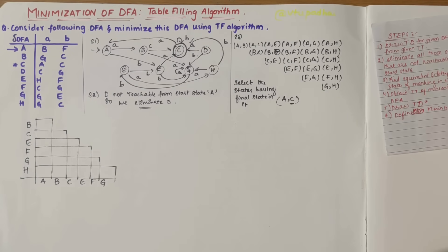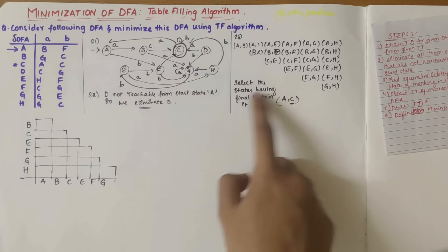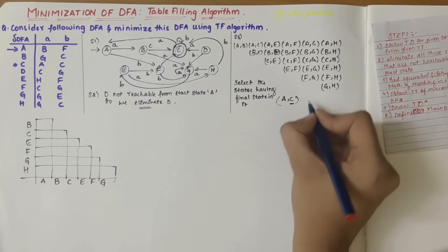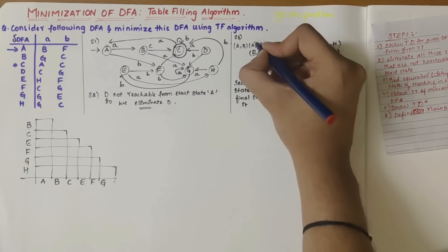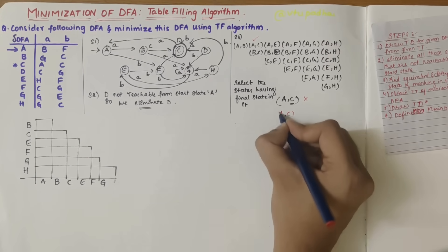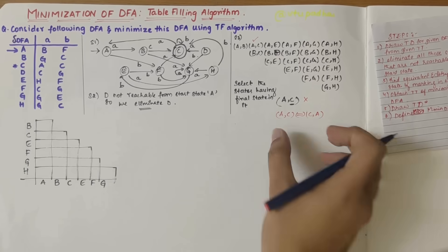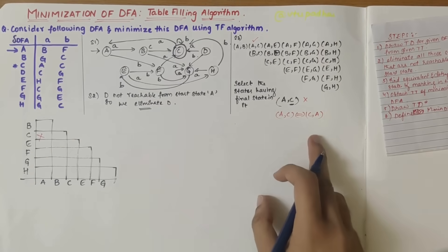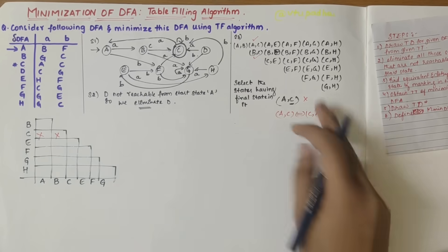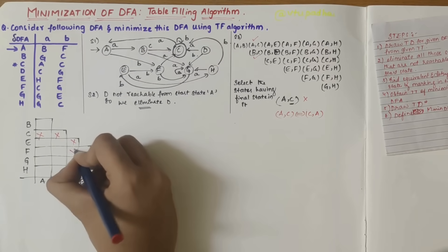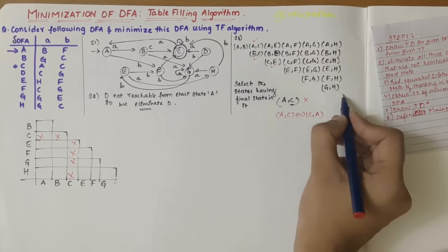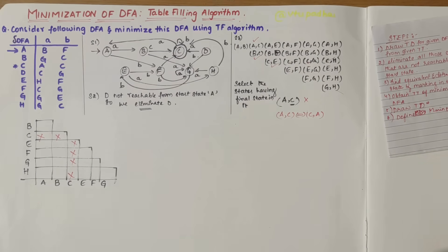Now that the table is constructed, the next step is to mark all combinations containing a final state with a cross. So a-c gets a cross mark — noting that a-c and c-a are the same — then b-c gets a cross mark, followed by c-e, c-f, c-g, and c-h. This completes step three.